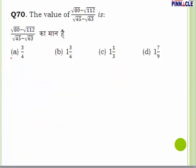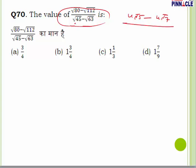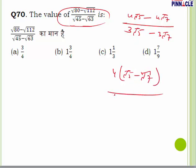Question number 70: simplify the given expression. Write √80 = 4√5, √112 = 4√7, √45 = 3√5, √63 = 3√7. The expression becomes (4√5 − 4√7)/(3√5 − 3√7). Take common 4 in numerator and 3 in denominator; (√5−√7) cancels, leaving 4/3. Answer is C (4/3).